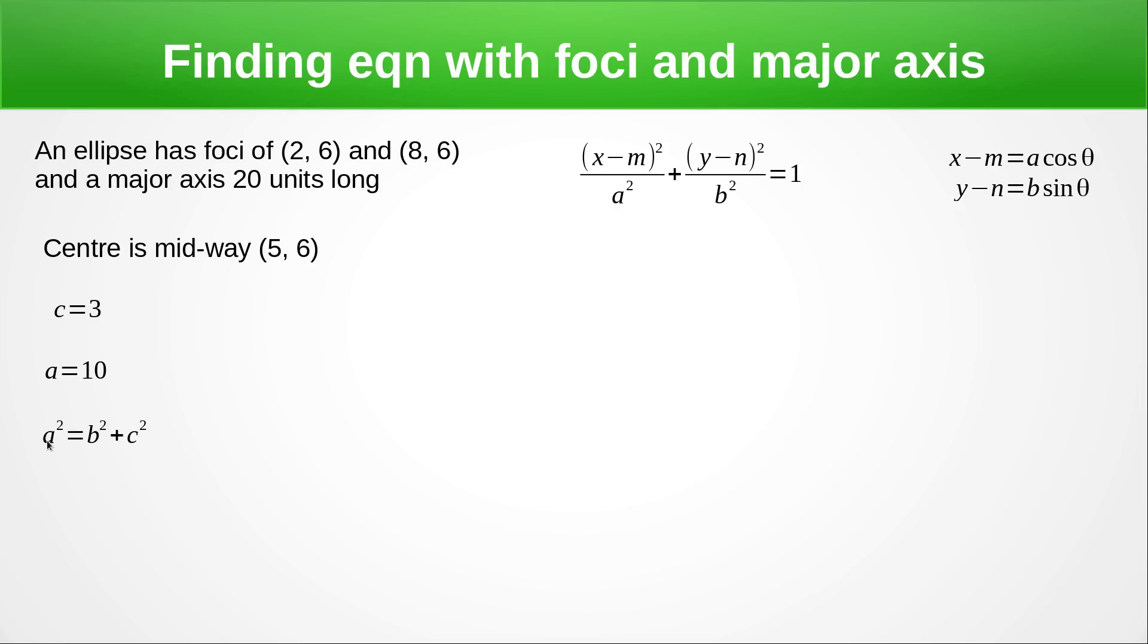Now we have this formula for linking A squared and B squared and C squared. Be careful because it is different to the one we're going to get for Hyperbola in a later video today. Now substituting the values here, rearranging. So B squared is A squared minus C squared so it's 100 minus 9. So B squared is 91. So we're just going to substitute in 91 for the B squared. We're going to substitute in 100 for A squared and the 5 and the 6 to give us this formula.